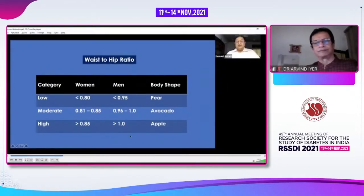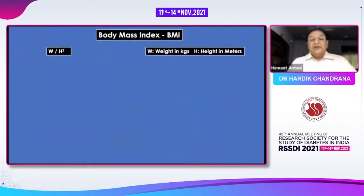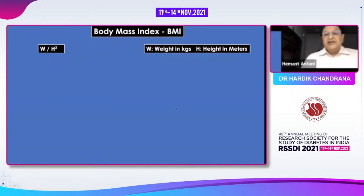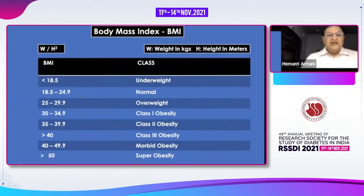This is the time where we really need to intervene and ask the patient to follow lifestyle modification. We have been doing this and will continue to do so, although there are certain disadvantages we will see later. Body mass index is measured by weight in kg divided by height in meter squared. BMI less than 18.5 is underweight; 18.5 to 25 is normal; 25 to 30 is overweight; then class one, two, and more than 40 is class three obesity. 40 to 50 is morbid obesity and more than 50 is called super obesity.